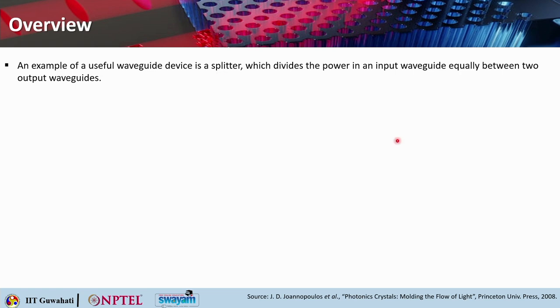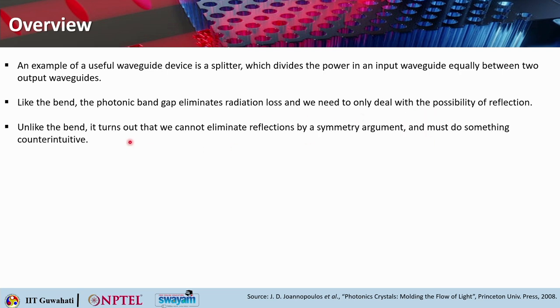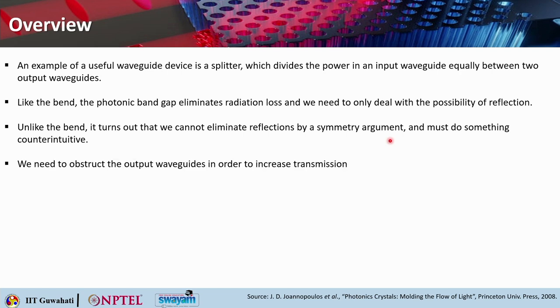What does the splitter do? It divides the power in an input waveguide equally between the two output waveguides. Like the bend, the photonic band gap here also eliminates the radiation loss, and we need to only deal with the possibility of reflection. Unlike the bend, it turns out that we cannot eliminate reflection by a symmetry argument, and we must do something counterintuitive. We need to obstruct the output waveguides in order to increase transmission. Before we go into the details, let us recall the basic formulae used in the temporal coupled mode analysis in the previous lecture.